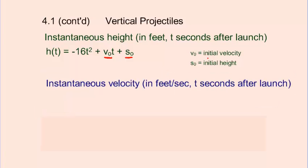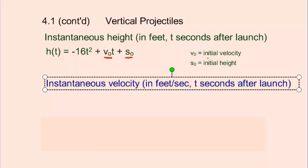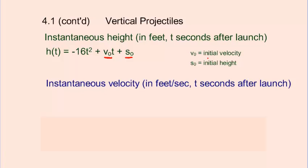From here, we should be able to figure out the instantaneous velocity, which, of course, would be measured in feet per second. To get from instantaneous height to instantaneous velocity, you simply differentiate. Because the rate of change, also known as the derivative, the rate of change of the height is, in fact, the velocity.